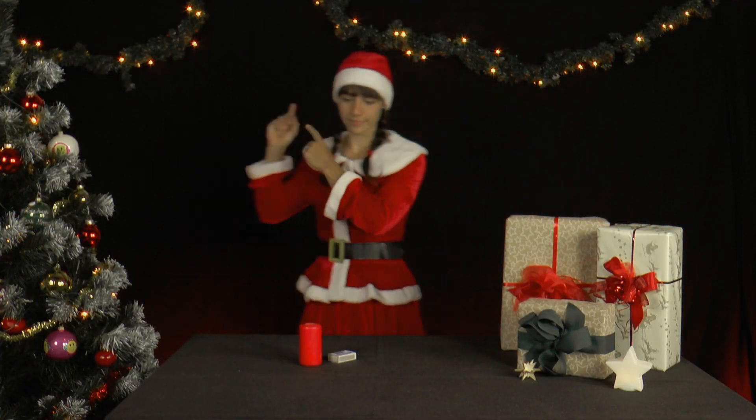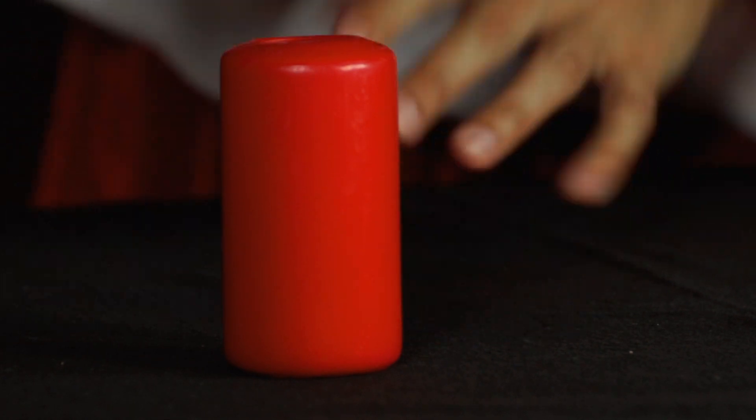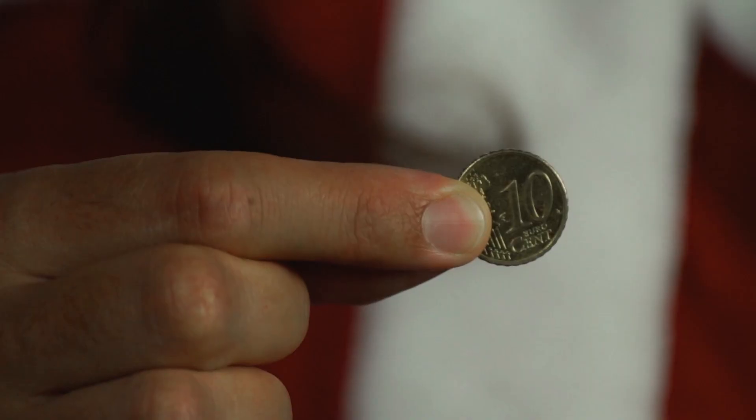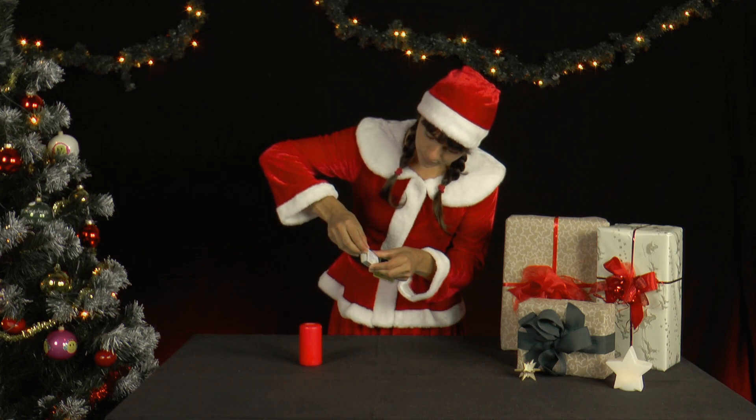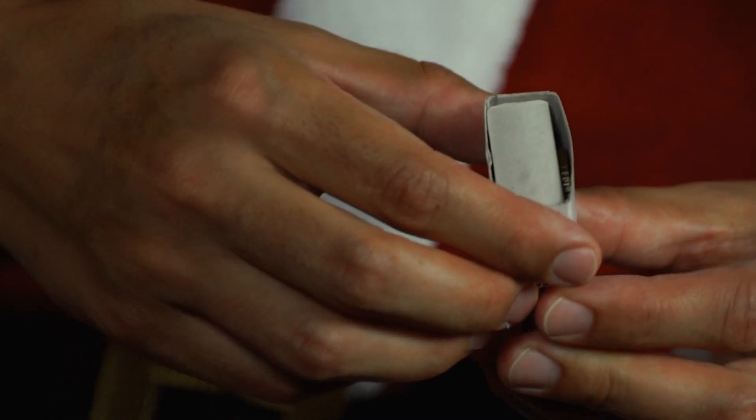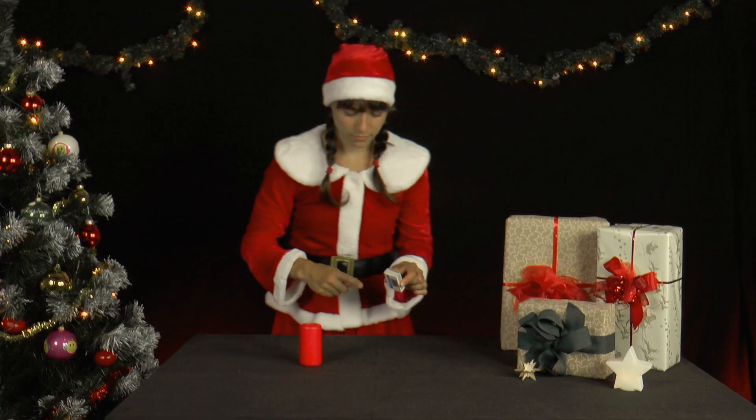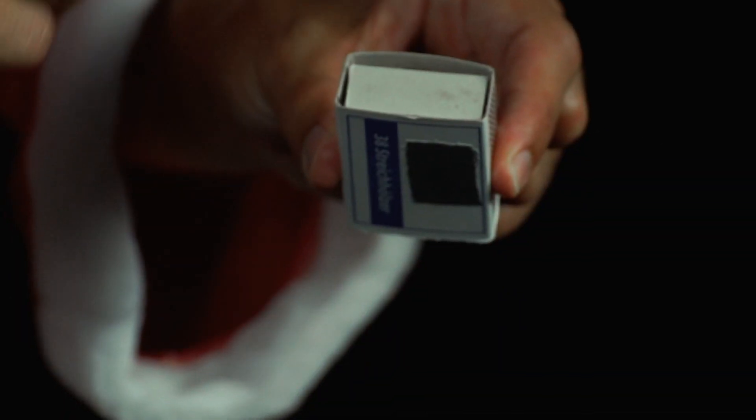Mrs. Santa likes to light a candle every morning, but what's going on? There are no matches in the matchbox, only a coin. You can certainly experiment with it. She puts the coin under the drawer of the box and holds the box to the side. Now she flicks from above onto the top edge of the box without hitting the coin or drawer.